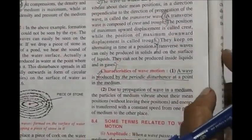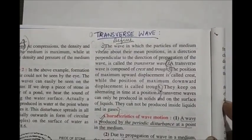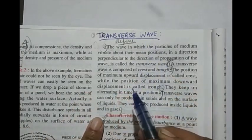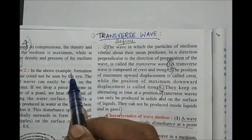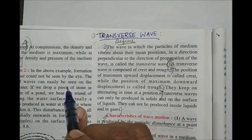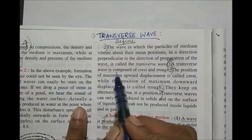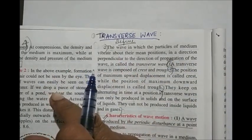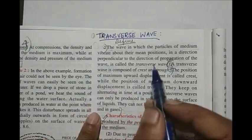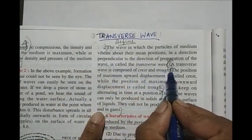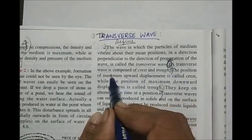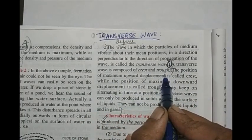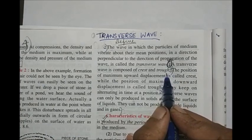Now come to the transverse wave — come to the right-hand side of this page and write the heading: transverse wave. The most common question is the difference between longitudinal wave and transverse wave. The first point in your difference will be: a transverse wave is composed of crest and trough, whereas a longitudinal wave has compression and rarefaction.